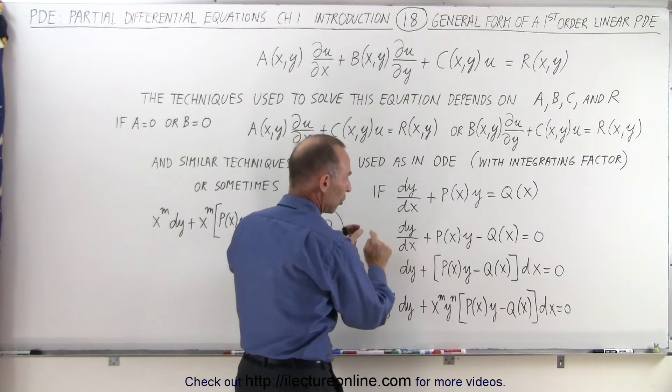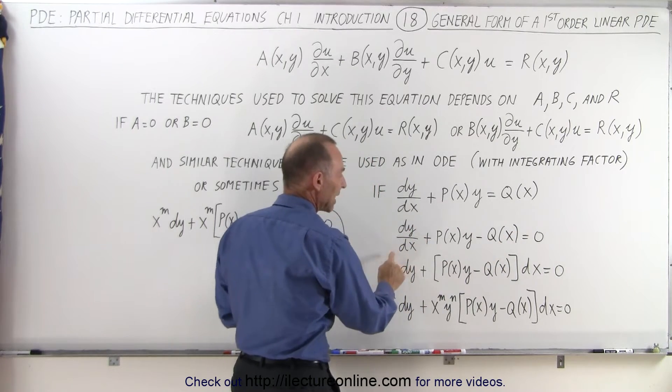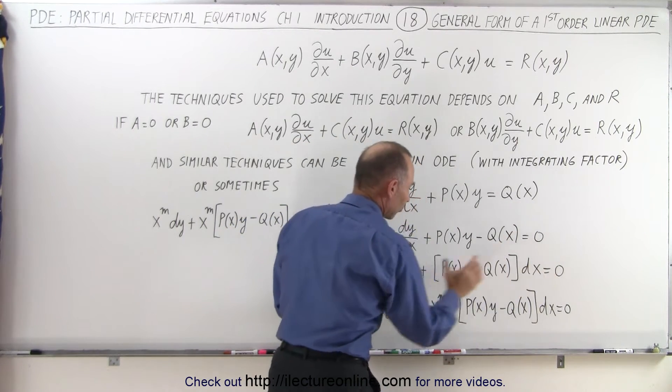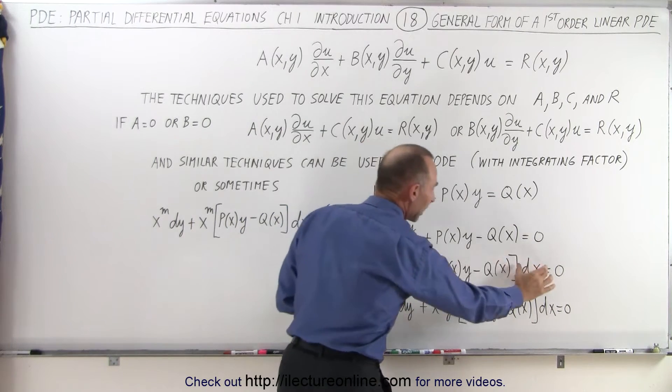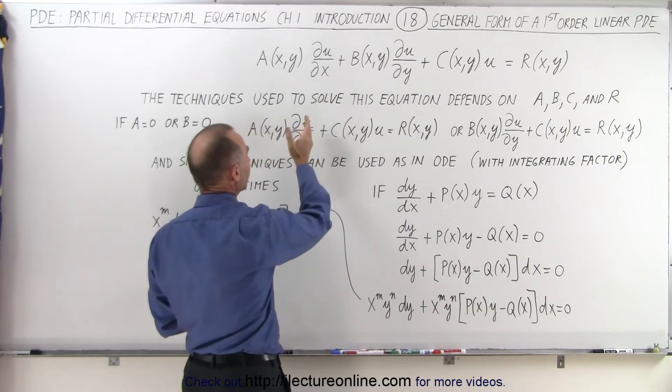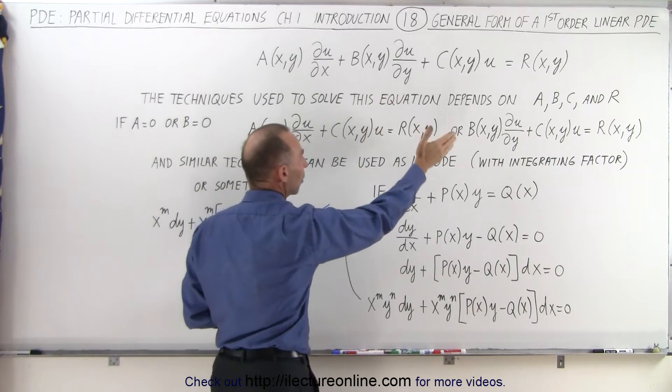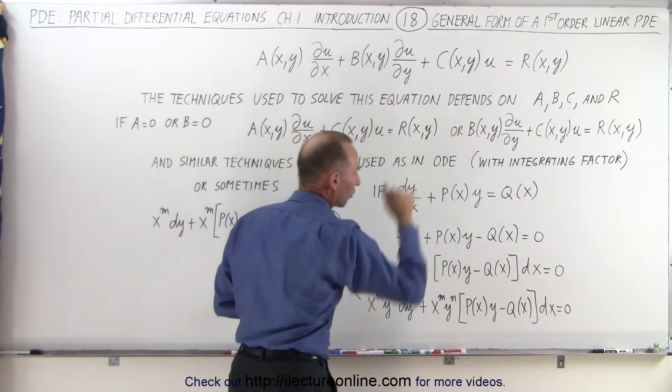And then we can bring this term to the left. Then we realize we have two terms. We can multiply both sides by dx, spread out the variables like this or separate the variables dy and dx. In this case, we have the separation of partial of u and partial of x or partial of x and partial of y.